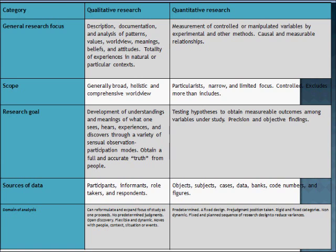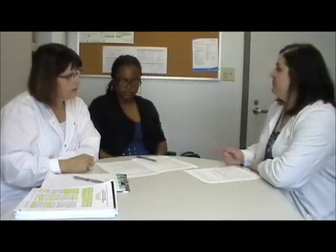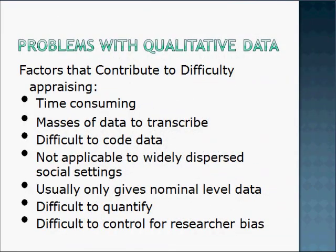Sources of data for qualitative research include participants, informants, role-takers, and respondents, whereas quantitative research is about objects, subjects, cases, data banks, code numbers, and figures. Sometimes the research can be time-consuming, it can produce massive data to sort through, sometimes it's hard to quantify, and of course it can sometimes be difficult to control research or bias. Furthermore, it's difficult to code the data, and it's usually not applicable to widely dispersed social settings.